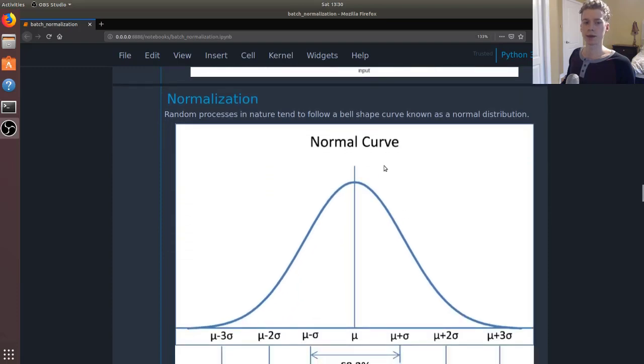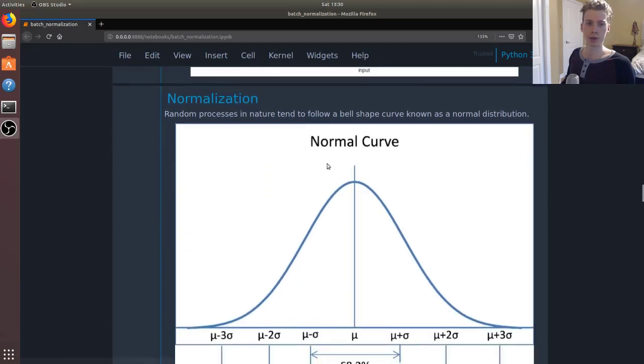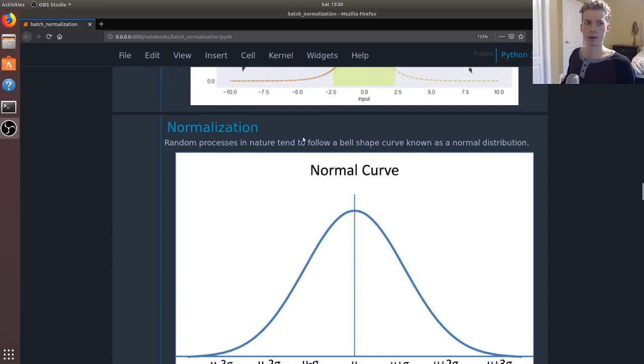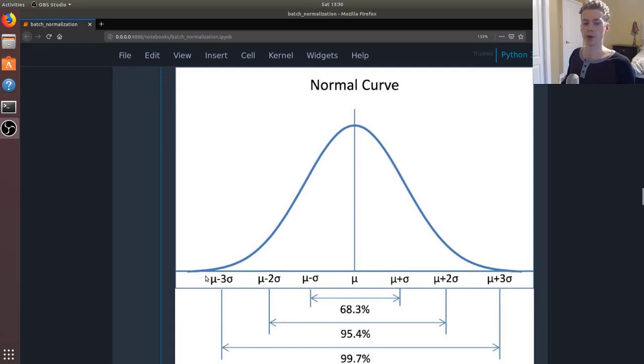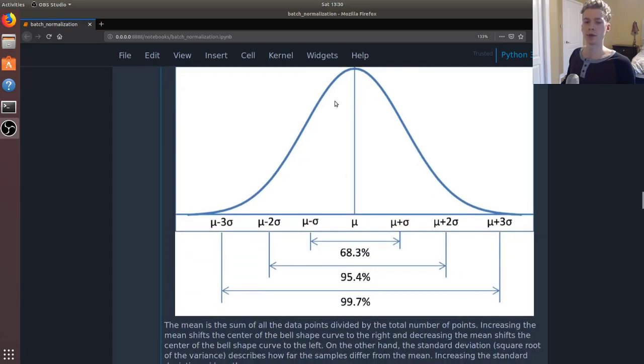I kind of explained normalization quickly there. Let's review it in a bit more depth for those of you who aren't familiar with it. This is your basic normal distribution. We have our mean here and the vast majority of the samples fall close to the mean.